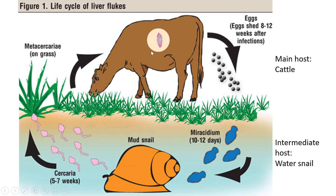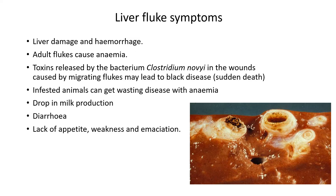To know if animals have liver fluke — it causes liver damage you won't see from the outside. Adult flukes cause anemia, and toxins released by bacteria in wounds caused by migrating flukes may also lead to black disease or sudden death. This is difficult to detect externally, but a post-mortem inspection will reveal that the liver has been affected and that the blood has also been impacted.